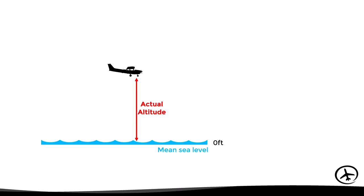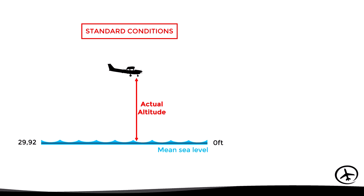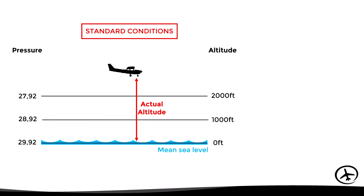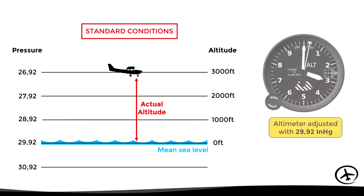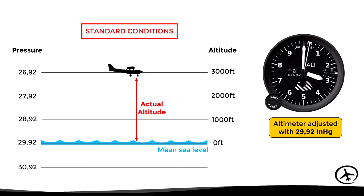The actual altitude is the vertical distance between the mean sea level and the aircraft. Under standard conditions, the pressure level that identifies the mean sea level is 29.92 inches of mercury, and the static pressure decreases with altitude at a rate of approximately one inch per thousand feet. Each line that identifies a pressure level is called an isobar. Under standard conditions, since the altimeter uses 29.92 as barometric reference, the indicated altitude equals the actual altitude.